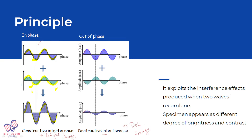In the phase contrast microscope, the interference effect is produced when two waves combine. The specimen appears different based on the degree of brightness and contrast. Changes occur depending on how the waves interact.